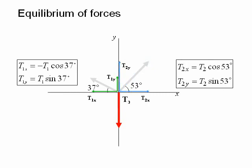T2x is equal to T2 cos 53 degrees and T2y is equal to T2 sin 53 degrees.